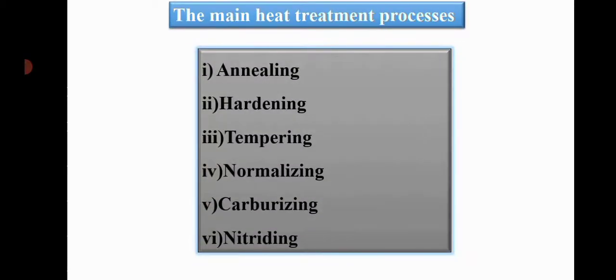There are six types of heat treatment of steel: annealing process, hardening, tempering, normalizing, carburizing, and nitriding.